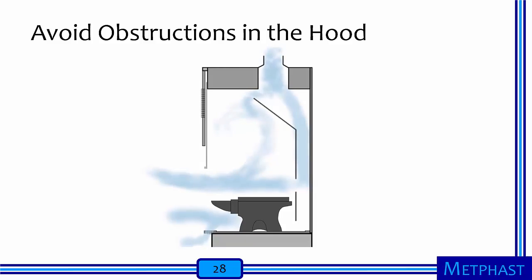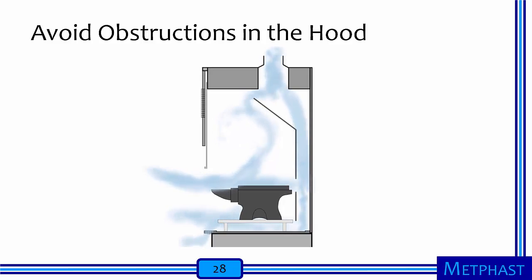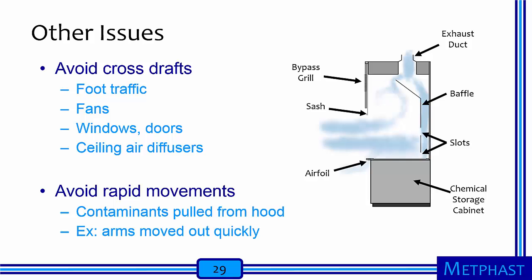Avoid placing unnecessary items in the fume hood for storage, as these can obstruct proper airflow from the front to the rear slots. Use a small table or shelf to elevate necessary items and allow air flow under the table. Never place anything on top of the airfoil or directly in front of the rear slots. When using a chemical fume hood, avoid cross drafts such as those from foot traffic, fans, windows, doors, or ceiling air diffusers, as drafts can dramatically change airflow patterns and cause contaminants to escape into the room. Also avoid rapid movements such as rapidly pulling your arms out of the hood, as such actions can also allow contaminants to enter the room.